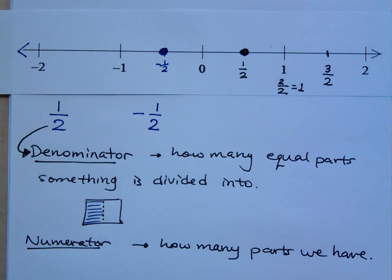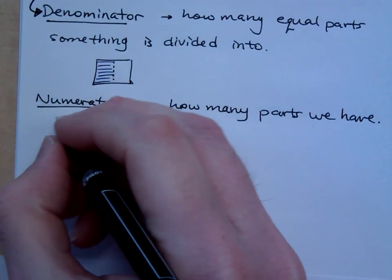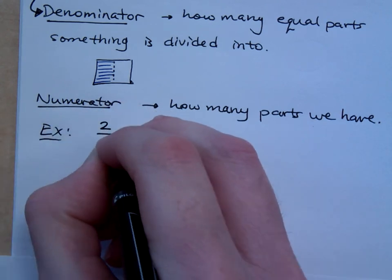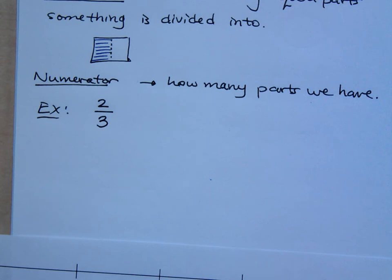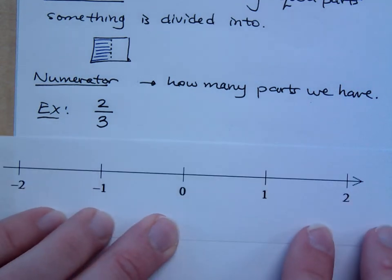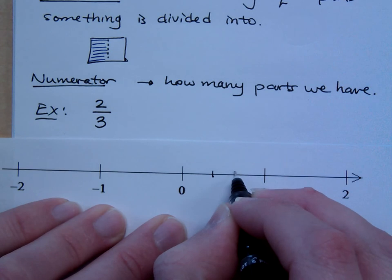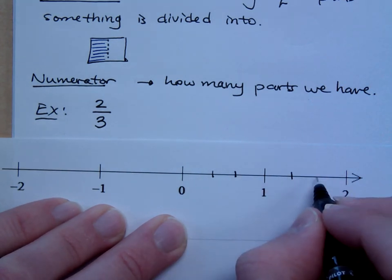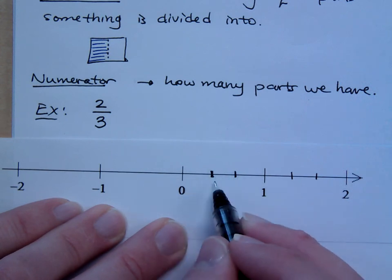Let's look at another fraction, see if we can get a better idea about where these fractions are on the number line — where are they in relation to the integers we're used to seeing? If I had the number two-thirds — what does two-thirds mean? If I've got my number line here, that means I'm dividing each whole unit into three equal pieces. Between zero and one, I'm dividing this into three equal pieces. Each piece here is one-third.